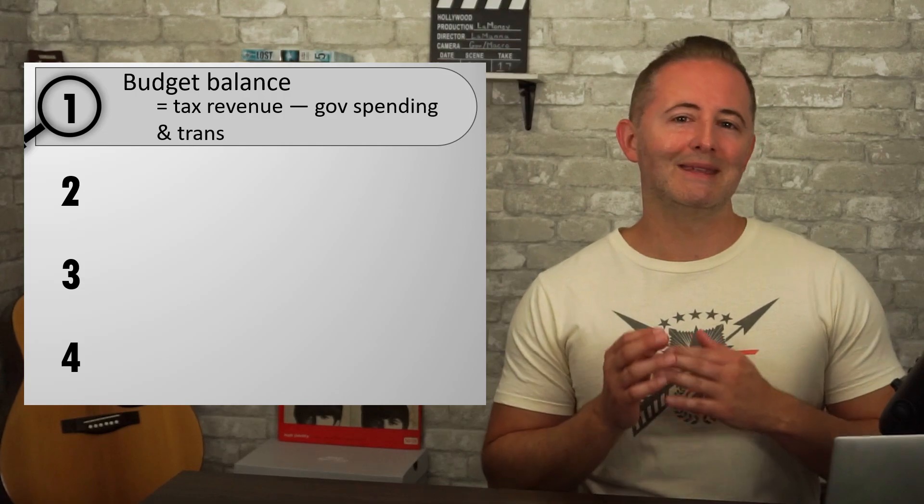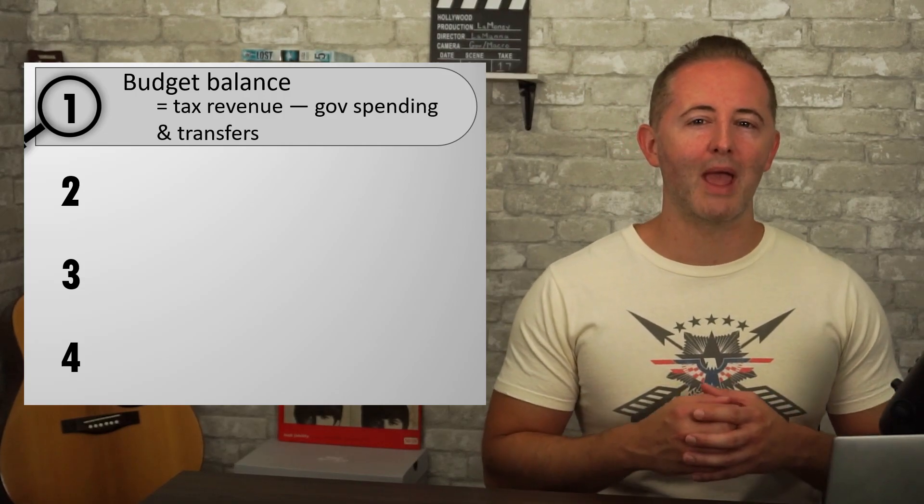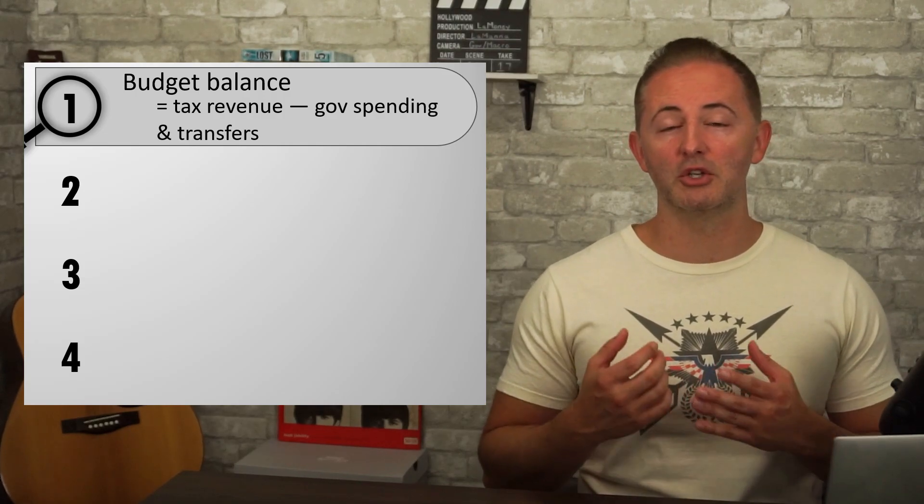Let's start at the very beginning. In the U.S., Congress and the President are in charge of taxation and passing a federal budget each year — that's fiscal policy. Changes to the level of government spending, transfers, or taxation therefore affect the federal budget balance, which refers to the difference between tax revenue and government spending and transfers.